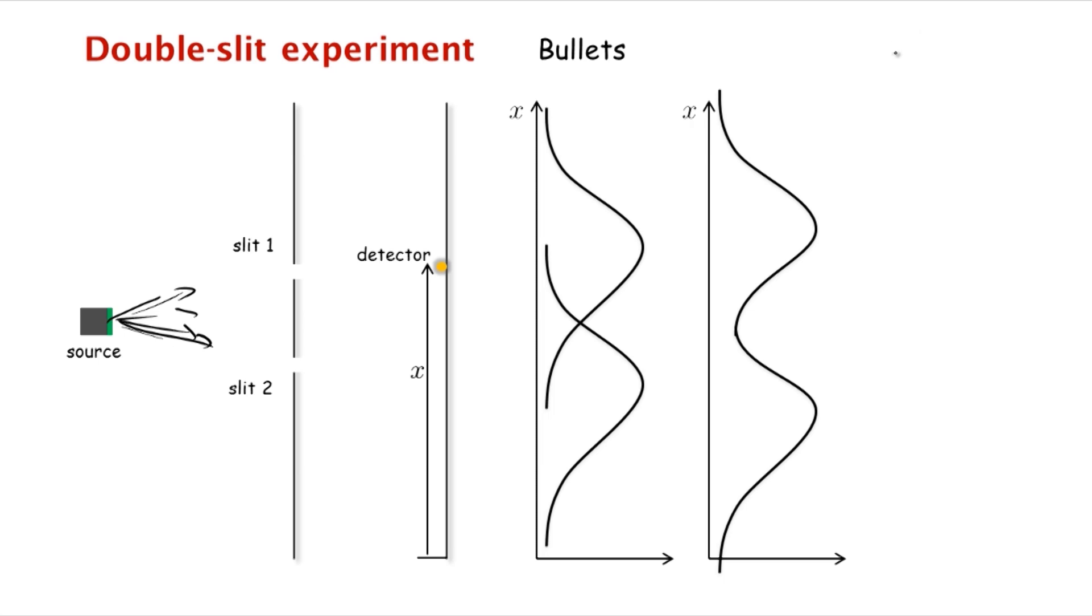What do we assume about bullets? We assume that they are indestructible, so they never break apart. And so our detector, which might be a box of sand, always detects a whole number of bullets.